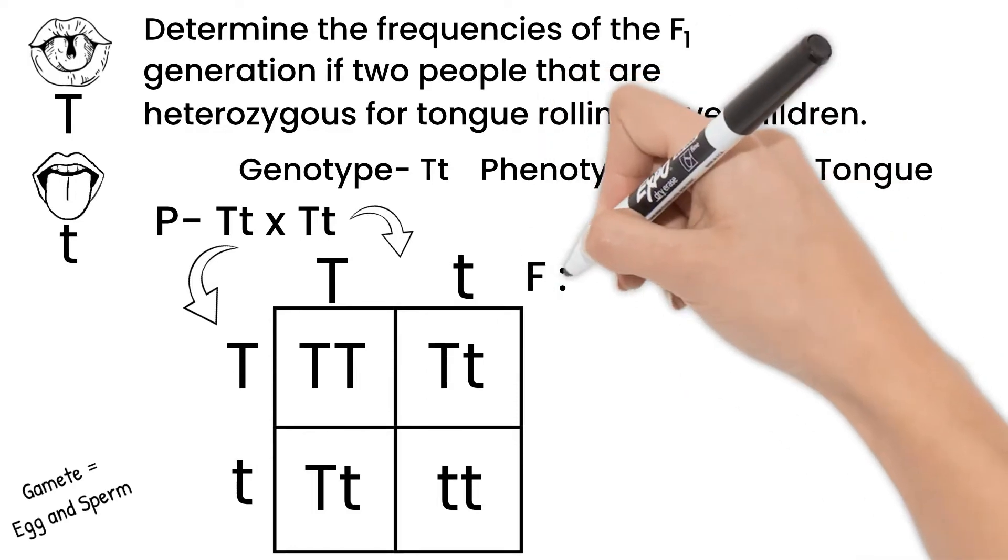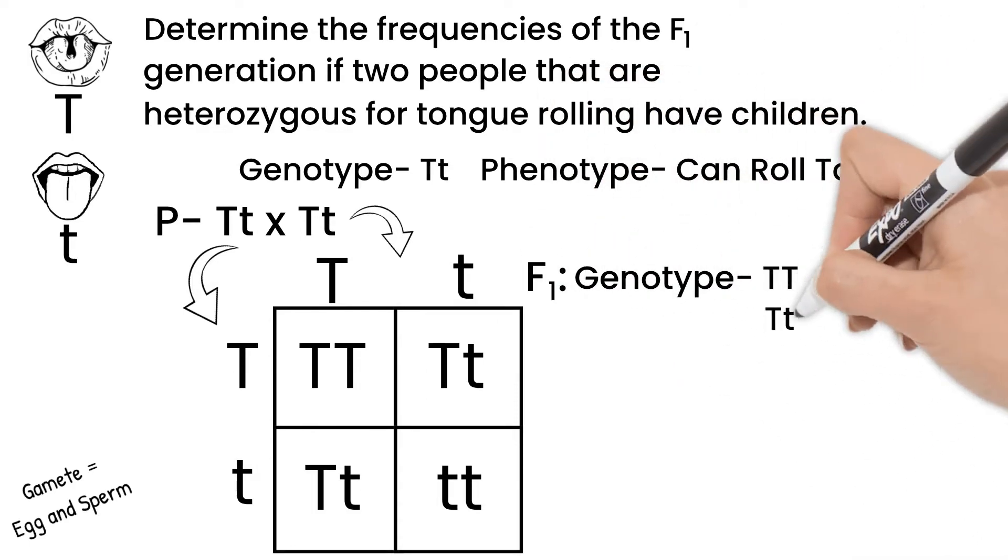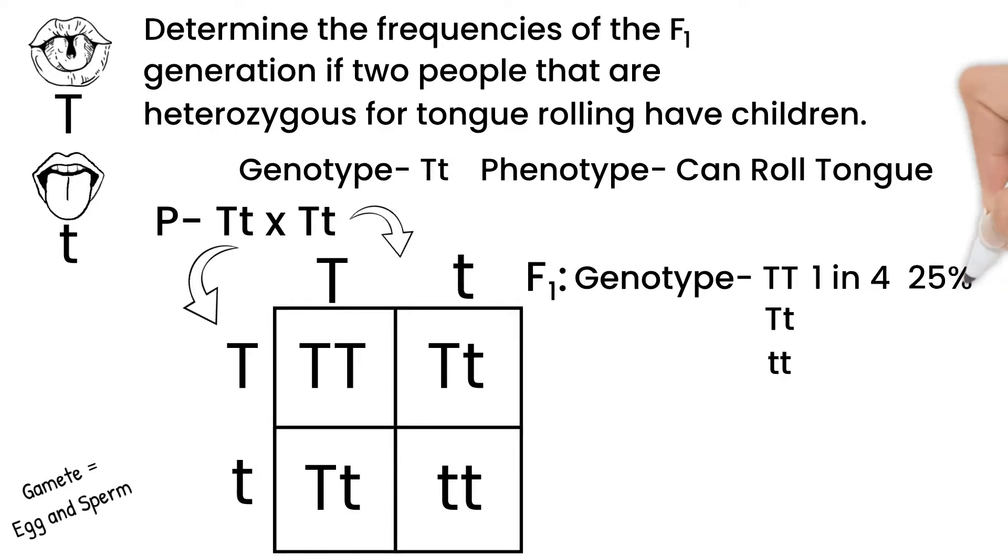Our possible genotypes are then these three options. Statistically, there is a 1 in 4, or 25% chance of having a child with homozygous dominant alleles, 50% chance of heterozygous, and 25% chance of homozygous recessive.